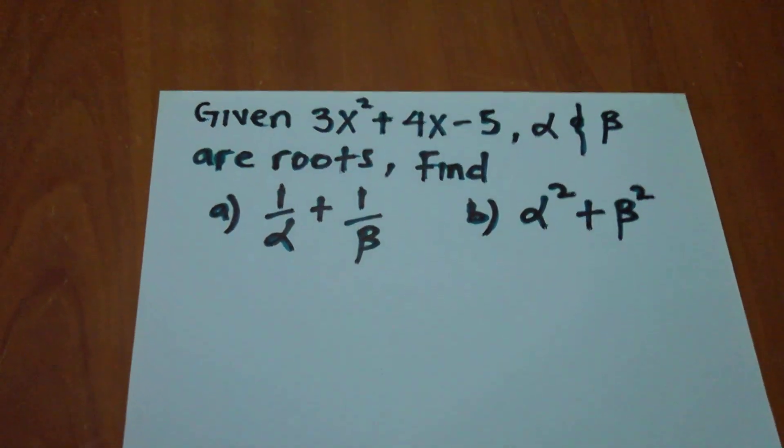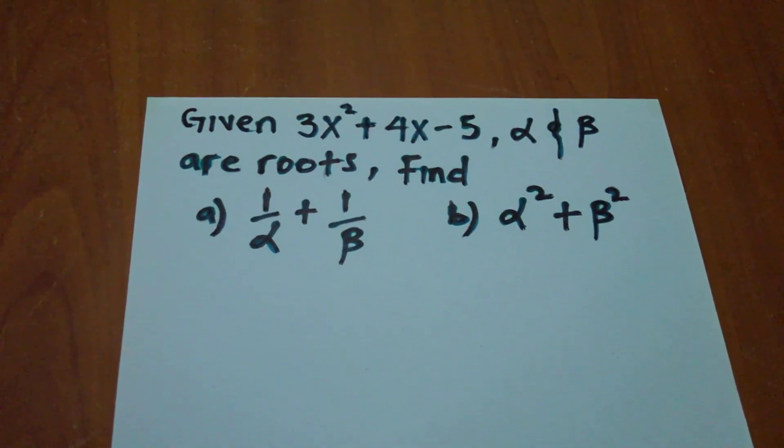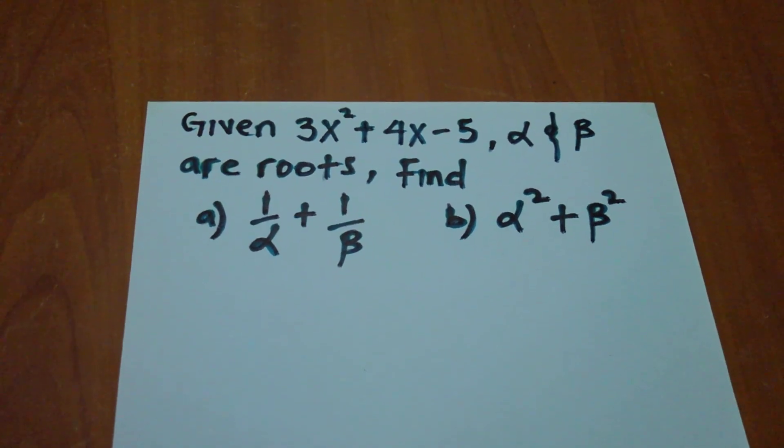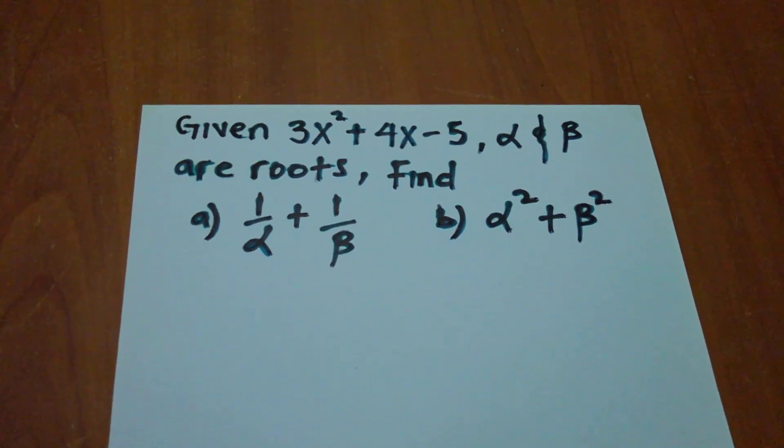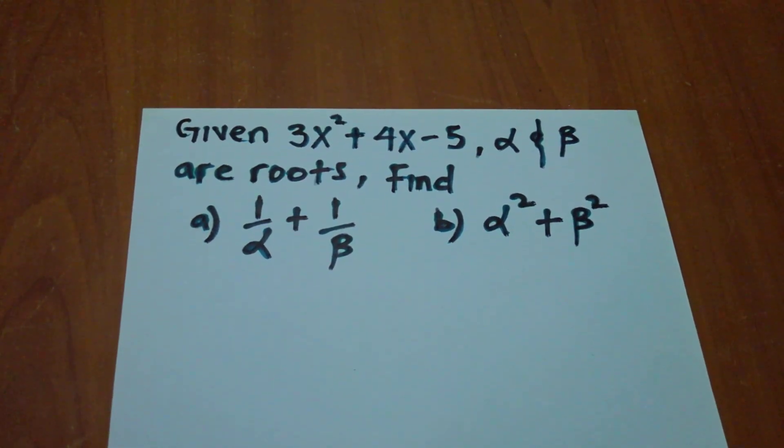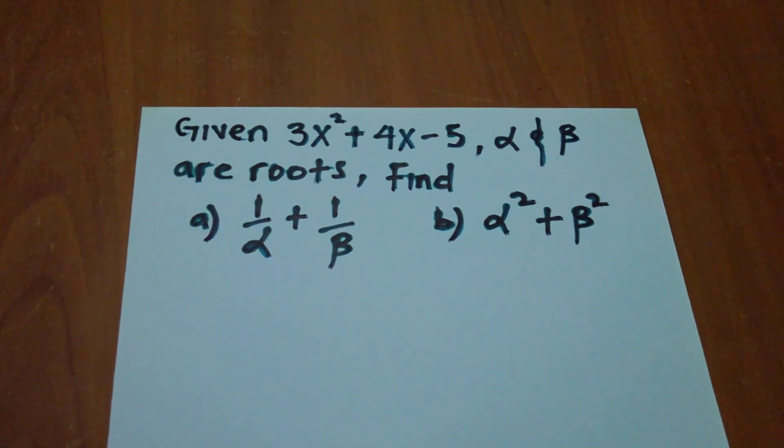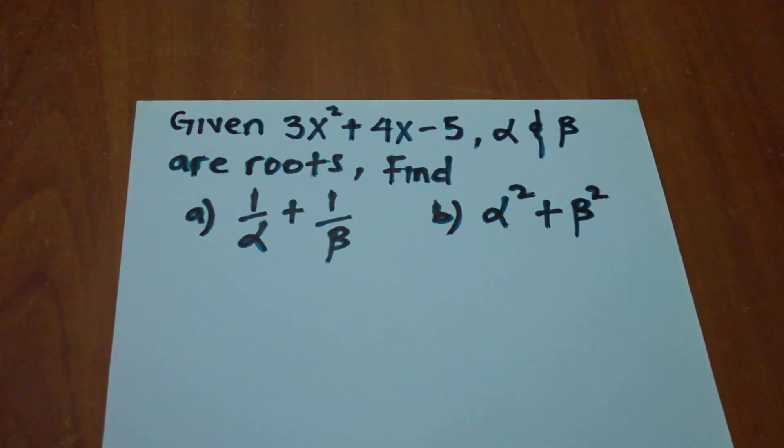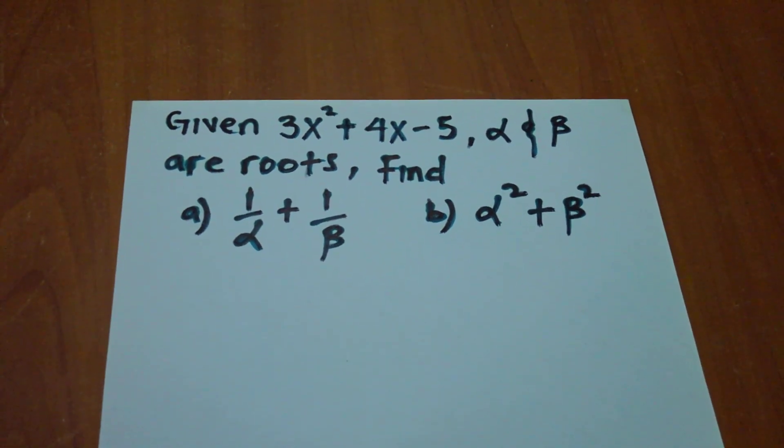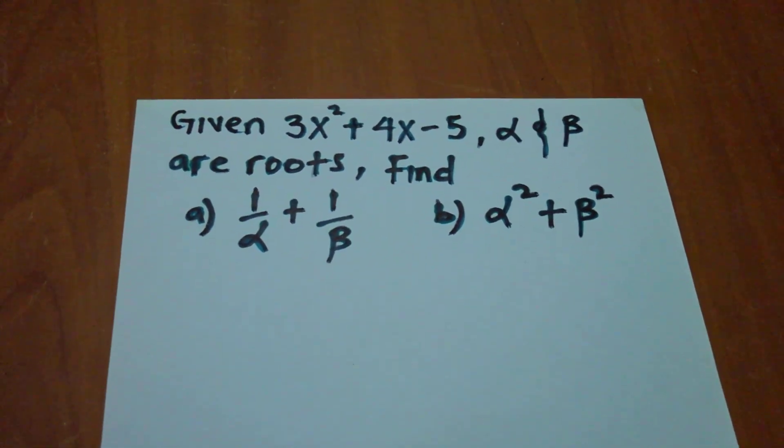Hello once again. We are having such a number which says 3x² + 4x - 5, with alpha and beta being given as our roots. Then they are saying find 1 over alpha plus 1 over beta, and part b, alpha squared plus beta squared. They want us to find the values of part a and part b.